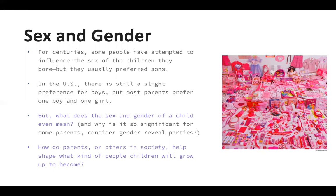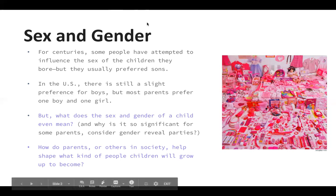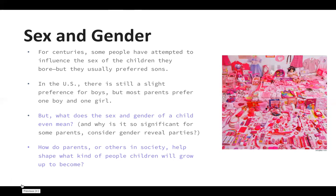There have been news stories about gender reveals gone wrong that result in property damage and even loss of life. As sociologists, one question this chapter addresses is: what do sex and gender even mean? What do these concepts mean, and how do parents and others in society help shape what kind of people children will grow up to become? There is also some discussion at the end about gender inequality and stratification, particularly in the arenas of education and work.